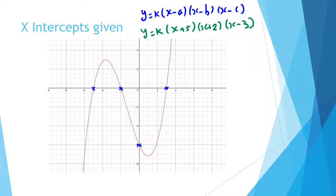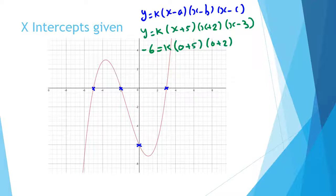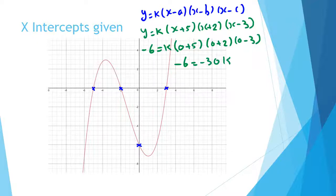We substitute that point into the equation to find k. So negative 6 equals k times (0 plus 5) times (0 plus 2) times (0 minus 3). That gives negative 6 equals k times 5 times 2 times negative 3, which is negative 30. So k equals negative 6 over negative 30.